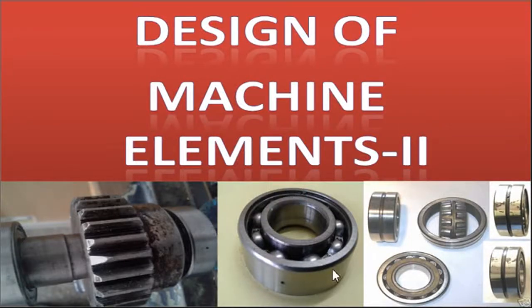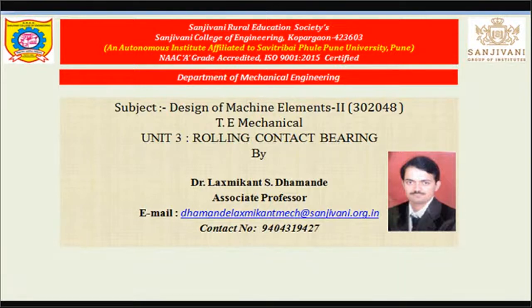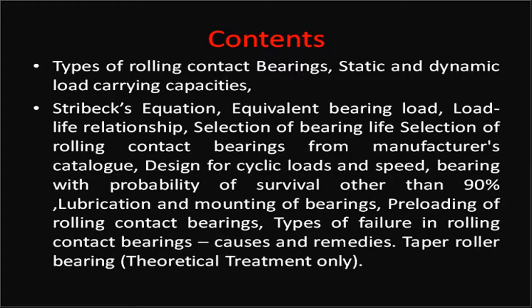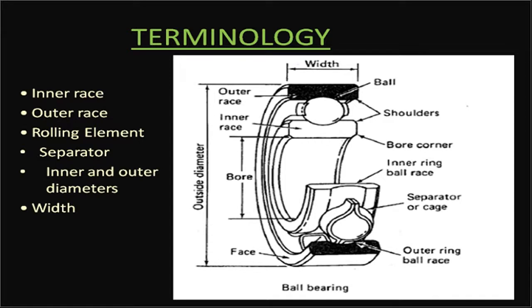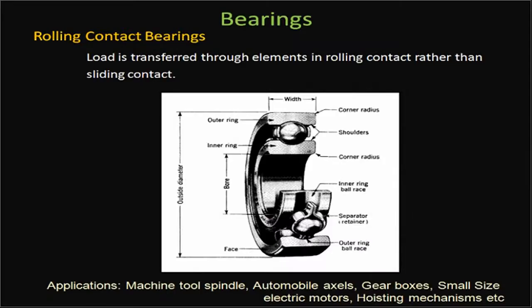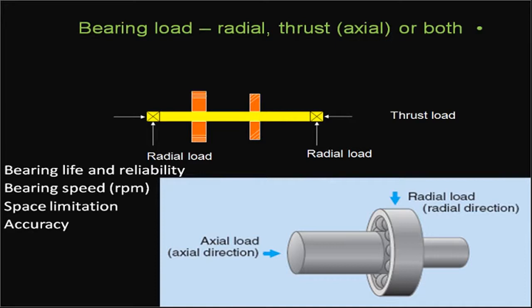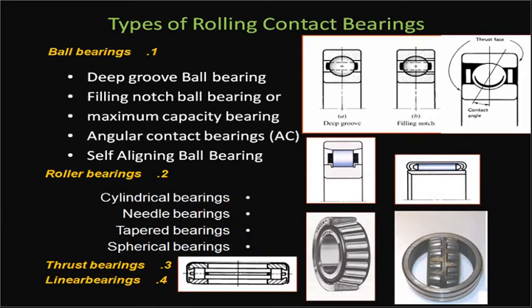Welcome to the course on Design of Machine Elements 2. In the last presentation, we introduced Unit 3 on rolling contact bearings, covering functions, terminology, and classification. These bearings carry different kinds of loads — radial loads and thrust loads — and accordingly different types are available. We discussed the deep groove ball bearing and the filling notch bearing, also called the maximum capacity bearing.